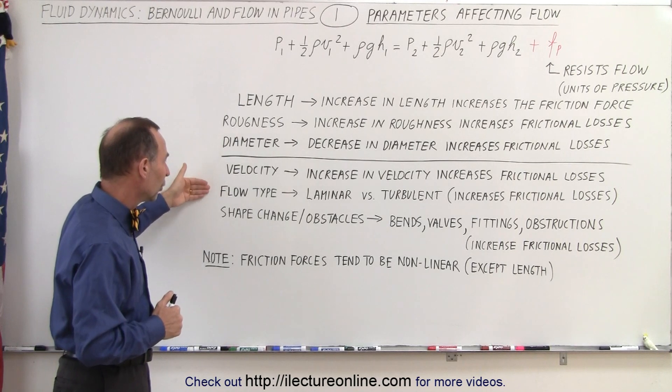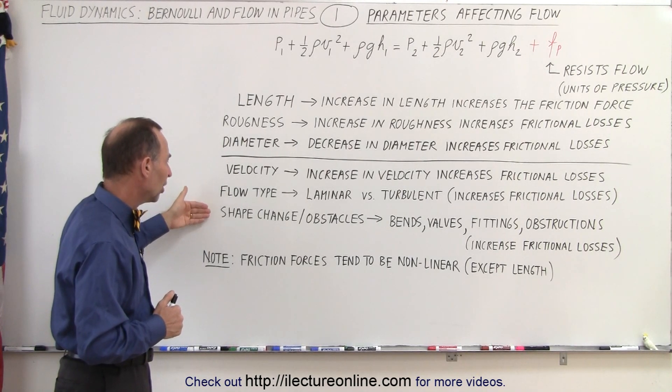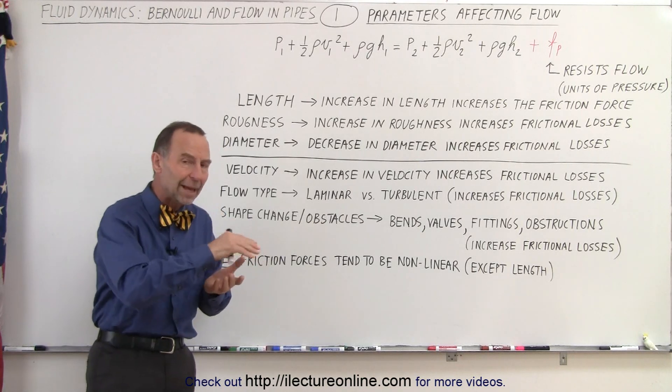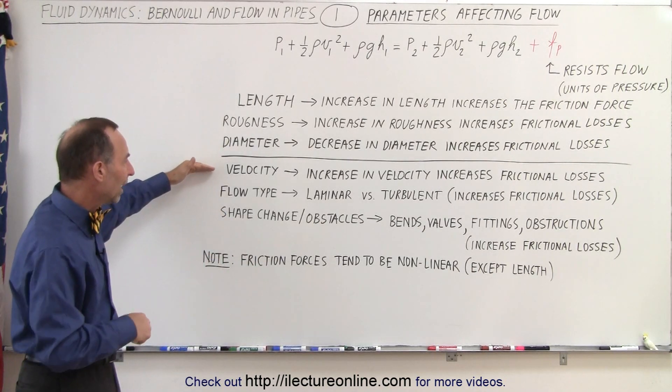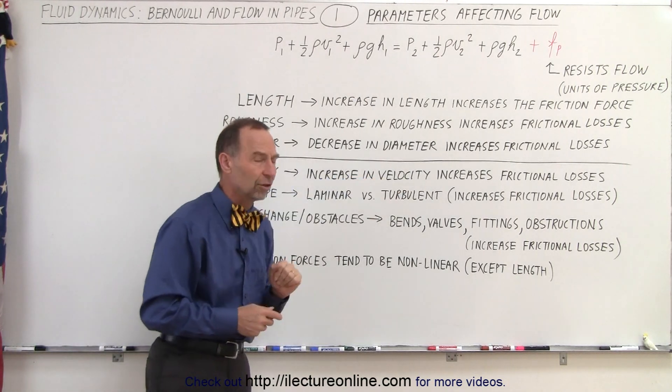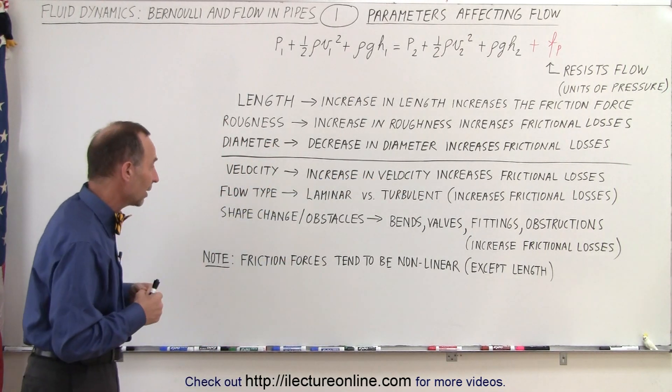Now here we have velocity, flow type, and the shape change within the pipe. That has more to do with how the fluid behaves inside the pipe. So as the velocity of the fluid increases, then we also increase the frictional losses, so there's another factor we need to take into account.